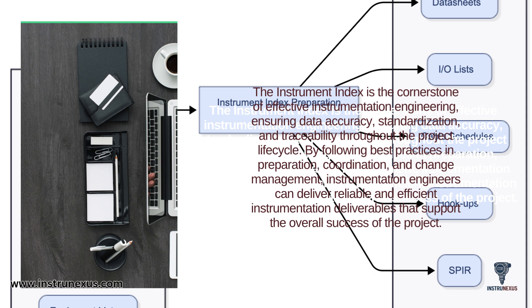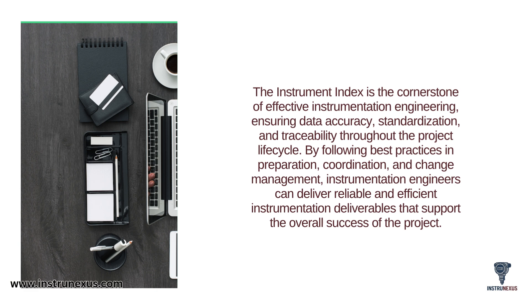In conclusion, the instrument index is far more than just a list — it is the cornerstone of effective instrumentation engineering. Its primary role is to ensure data accuracy, standardization, and traceability throughout the entire project life cycle. By following the best practices we've discussed for preparation, coordination with all disciplines, and rigorous change management, instrumentation engineers can deliver reliable and efficient instrumentation deliverables, which in turn supports the overall success of the entire project. Thank you for watching this guide on the instrument index. Please like, share, and subscribe for more content on instrumentation and control engineering, and leave any questions in the comments below.